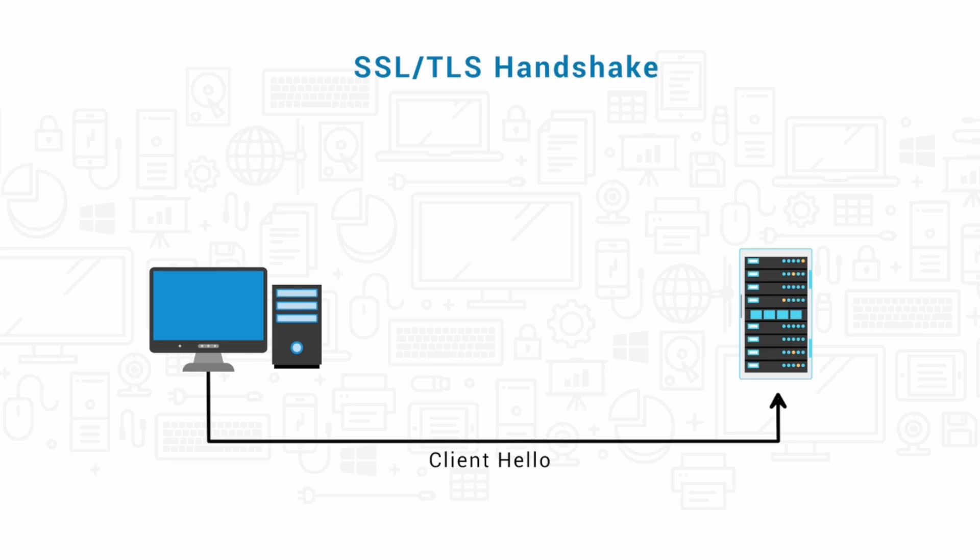When the server receives the client hello message, it responds with a message called a server hello. The server hello message contains the chosen protocol version, another random number, a selected cipher, and a selected compression method — all chosen from the list offered initially by the client hello message. The chosen protocol version is the highest common version that both support. For example, if the client supports TLS 1.0 and the server supports TLS 1.2, they settle on TLS 1.0.